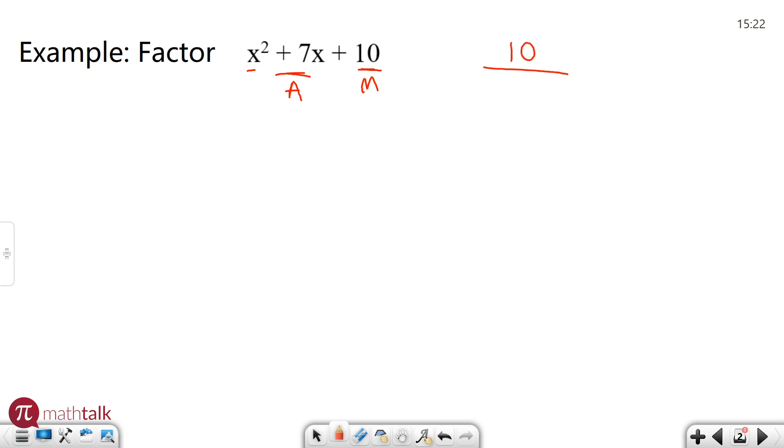So factors of 10, you start with 1 times 10 and then you look at the next ones you have 2 times 5 and that's pretty much it. So you want to look at those pairs and say can I find a way to get any of those two numbers to add up to positive 7 or subtract to get positive 7. And so obviously 1 and 10 are not going to work, but if I look at 2 and 5, if I take positive 2 and positive 5, well 2 plus 5 is 7. So those are the two numbers that I want to use.